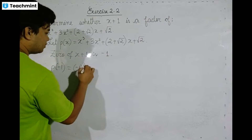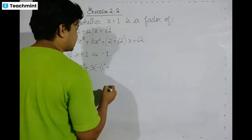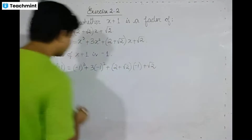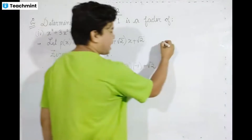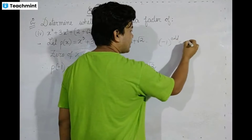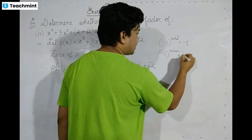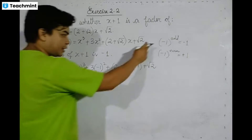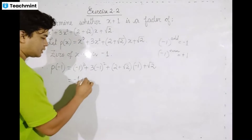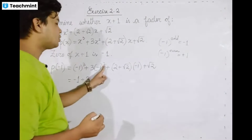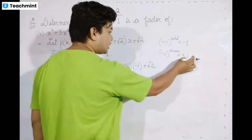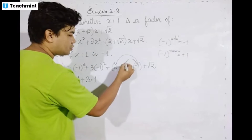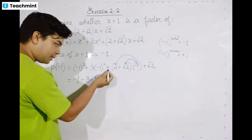P(−1) = (−1)³ + 3(−1)² + (2 + √2)(−1) + √2. Minus 1 whole cube, plus 3 times minus 1 whole square, plus root 2 minus 1 whole square plus root 2. For the squared term, the power of 2 is even, so it gives plus 1, and 3 into 1 gives 3.